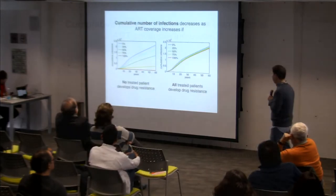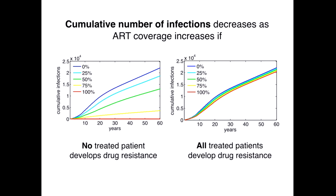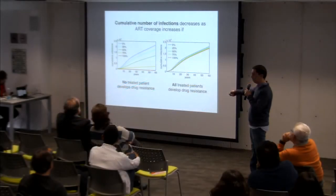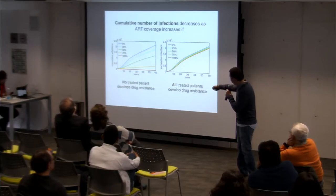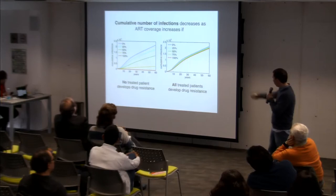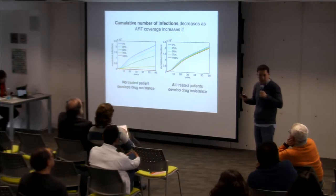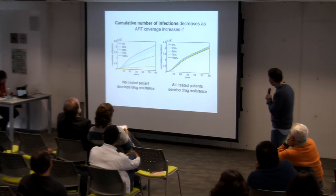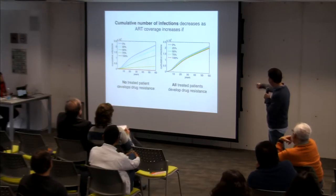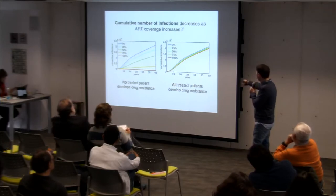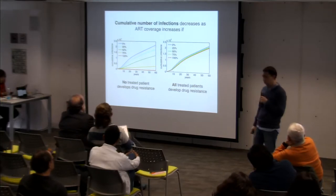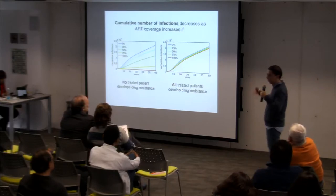Some results: unsurprisingly, if we increase the ART coverage, the cumulative number of infections decreases. Showing five different percentages, they go down if there is no drug resistance at all — basically the therapy is quite successful. We see the same trend, at a very different scale, if all treated patients develop drug resistance — but in that case the drug isn't doing anything.